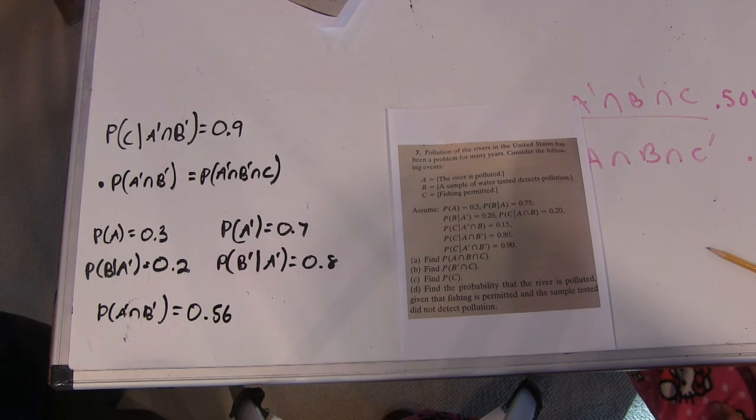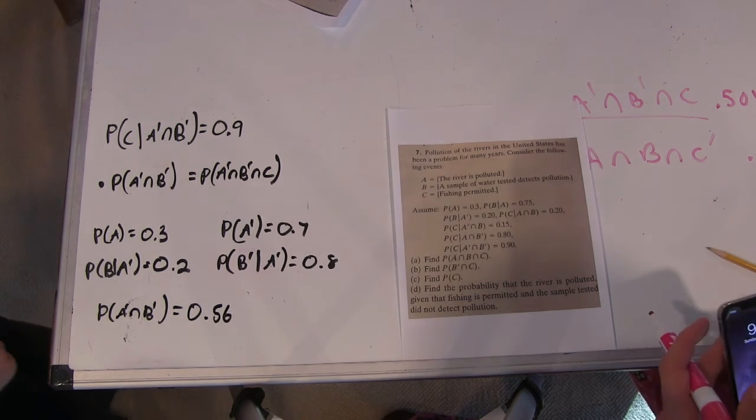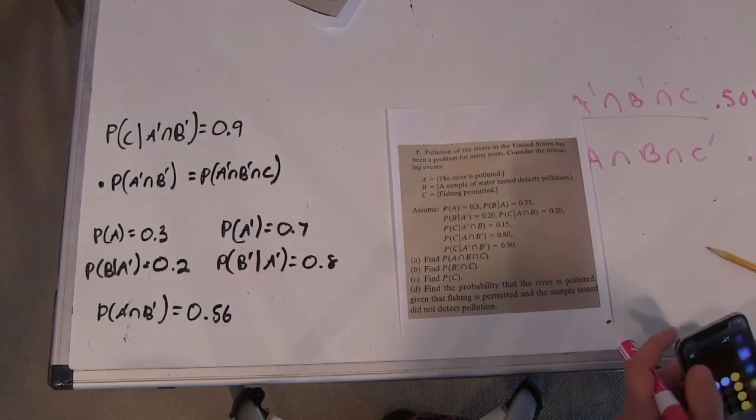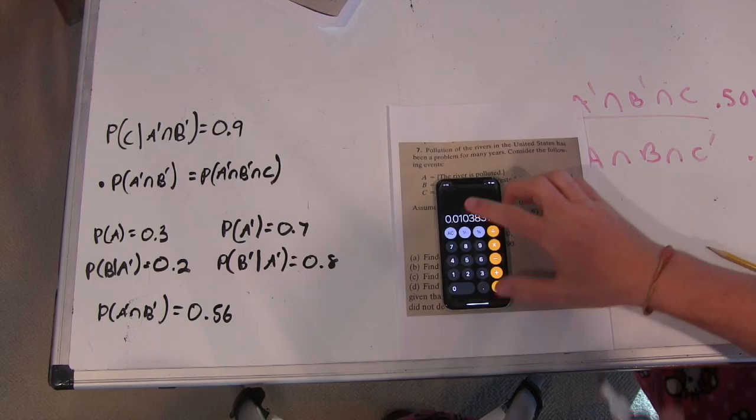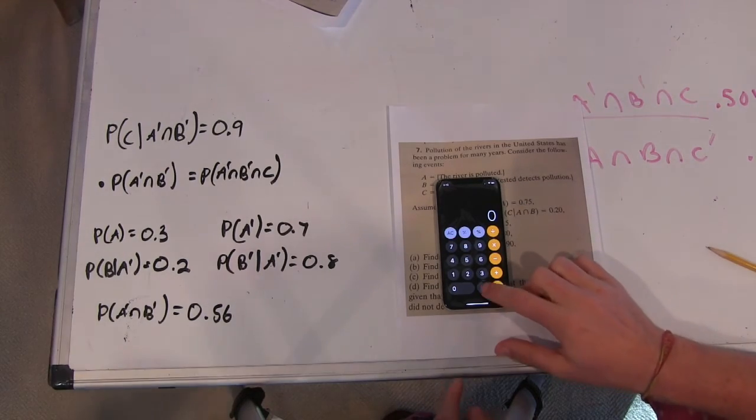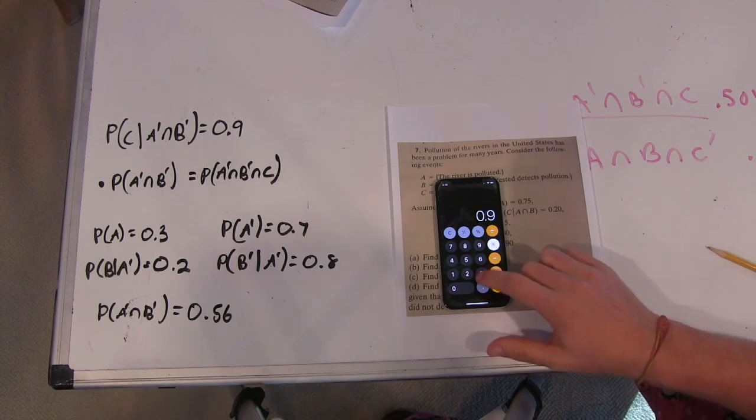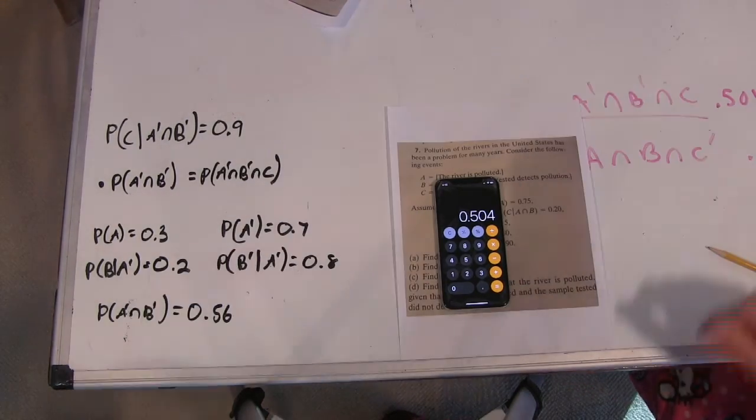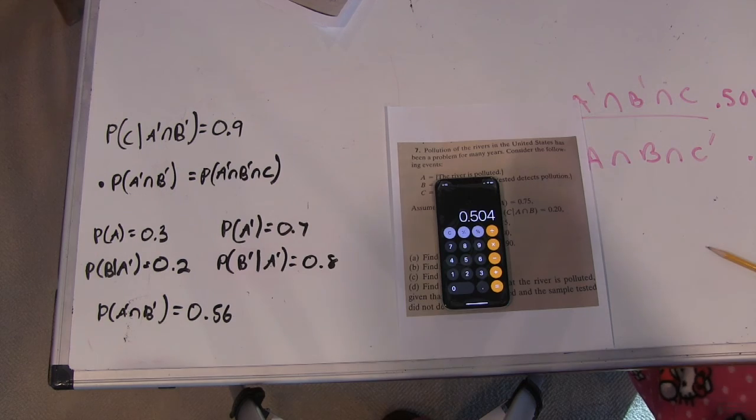And now we just multiply 0.9 times 0.56. I'm just grabbing my phone and bringing it over. So we do 0.9 times 0.56. Is that on screen by the way? It is. Now we get 0.504 and that in fact is exactly the number we're looking for. Yes.